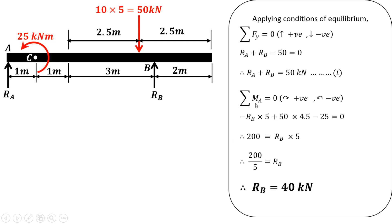Summation of moments about A equals 0, with clockwise positive and anticlockwise negative. RB is acting upward, so it produces an anticlockwise moment about point A — that is minus RB. The perpendicular distance between B and A is 3 plus 1 plus 1, that is 5. So minus RB into 5. The 50 kN load produces a clockwise moment about A, and the perpendicular distance is 2.5 plus 1 plus 1, that is 4.5.